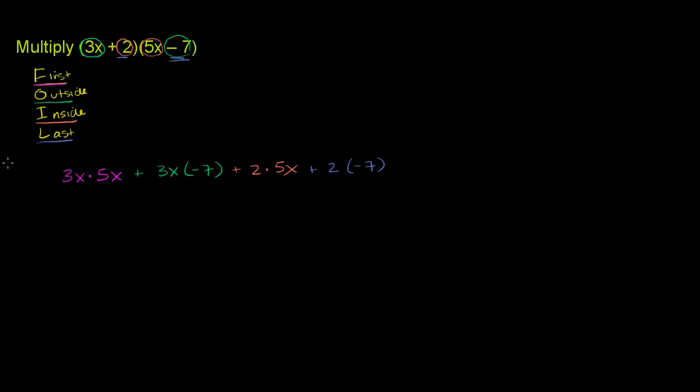But anyway, let's just multiply this out to get our answer. 3x times 5x is the same thing as 3 times 5 times x times x, which is the same thing as 15x squared. You multiply the x's, you get x squared. 3 times 5 is 15.